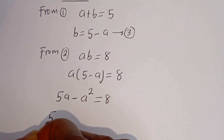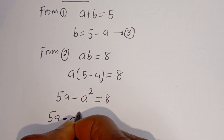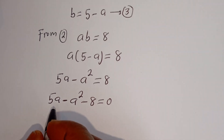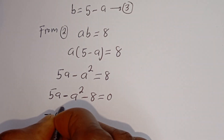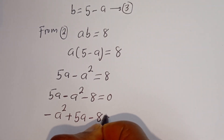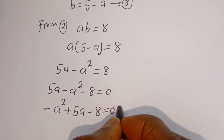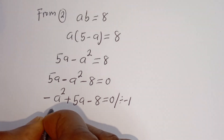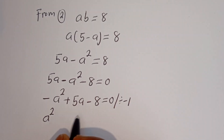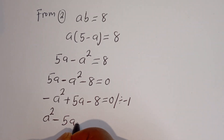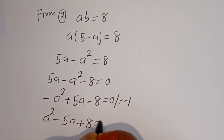Then this gives 5A minus A squared minus 8 is equal to 0. Let's rearrange this: we have minus A squared plus 5A minus 8 is equal to 0. Then we can divide all terms by minus 1, giving A squared minus 5A plus 8 is equal to 0.